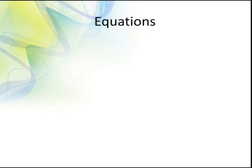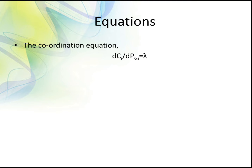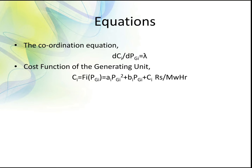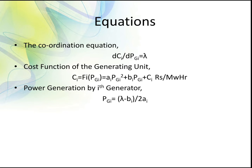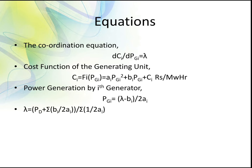For solving the economic dispatch problem we need to consider some equations. The coordination equation, which is the incremental cost equation, is dC_i / dP_gi = lambda. The cost function of the generating unit is C_i = f_i(P_gi) = a_i * P_gi squared + b_i * P_gi + c_i (rupees per megawatt per hour). The power generated by the i-th generator is P_gi = (lambda - b_i) / (2*a_i), and lambda = (Pd + summation of b_i/(2*a_i)) / (summation of 1/(2*a_i)).